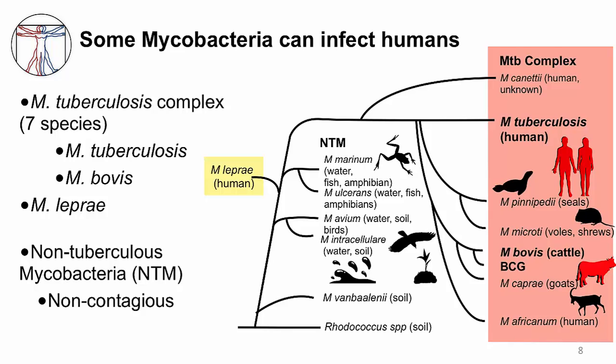Like MTB, M. leprae only infects humans. Mycobacteria that are not in the MTB complex are called non-tuberculous mycobacteria, or NTM. These mycobacteria are predominantly environmental but can infect humans and other animals. Unlike MTB, non-tuberculous mycobacteria are not contagious. Human infection is a result of being exposed to an environmental source. NTMs are opportunistic human pathogens and can cause disease primarily in immune-suppressed hosts.